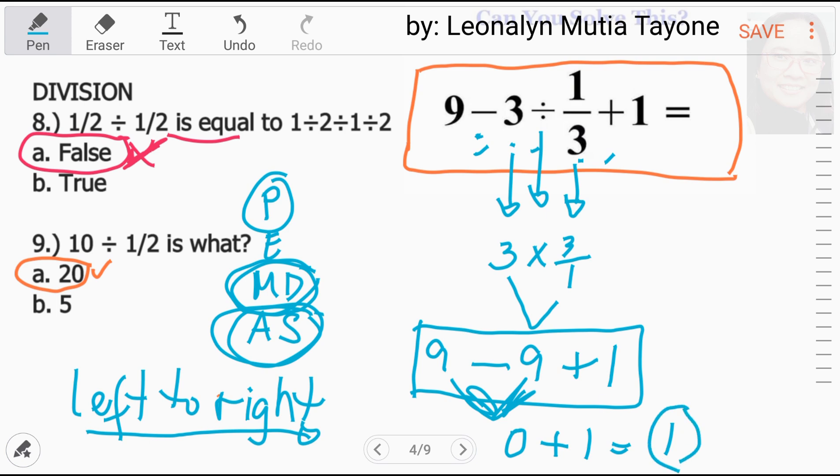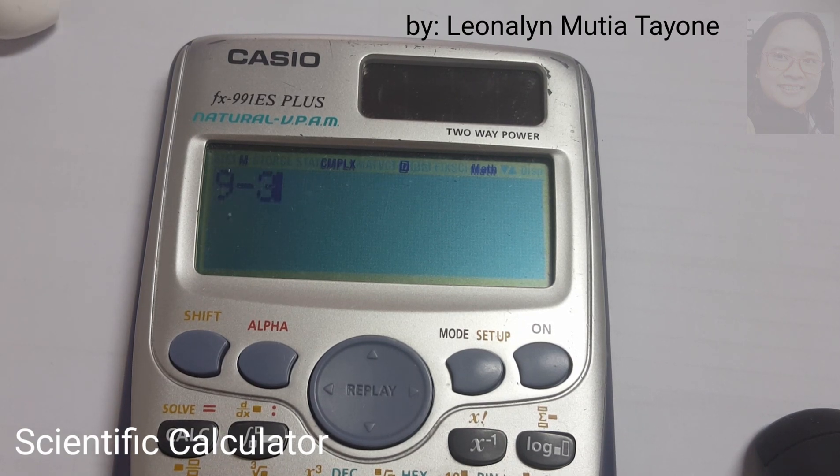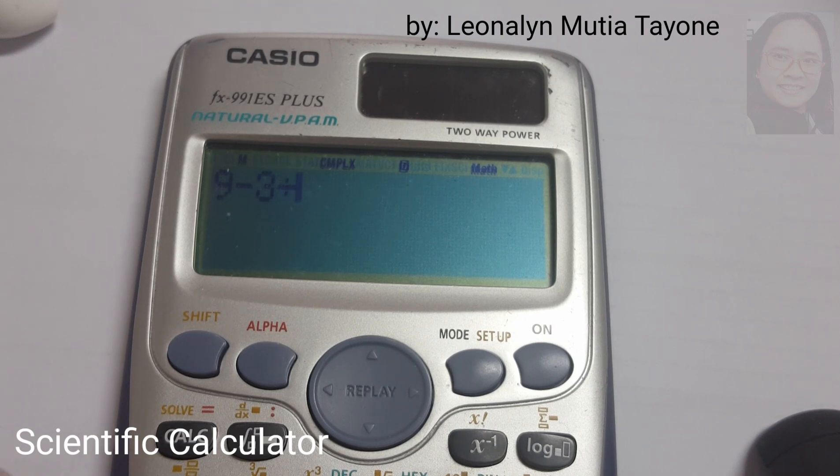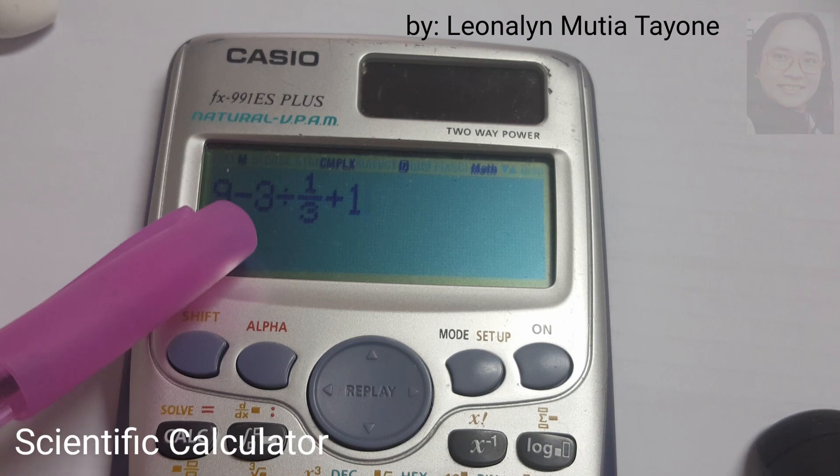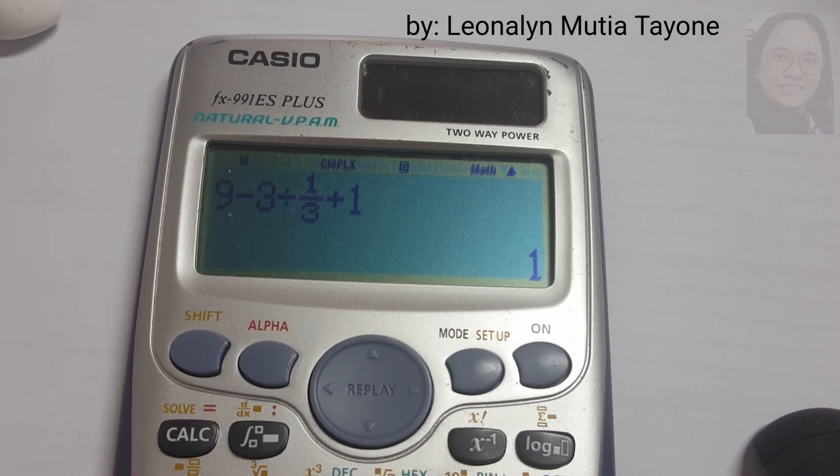So, ang sagot dito ay 1. Ang sagot dito. Para mas malinaw lang, gamitan natin ng scientific calculator. 9 minus 3 divided by 1 third. So, 1 over 3. Next, plus 1. So, that is 9 minus 3 divided by 1 third plus 1. And that is equals to 1. So, therefore, ang sagot natin na 1 ay tama.